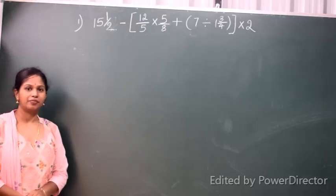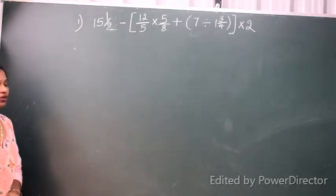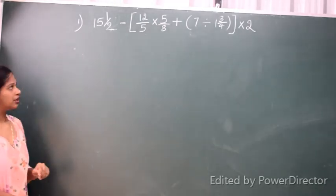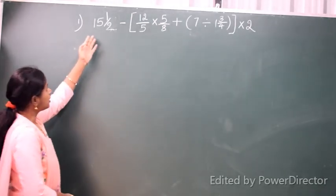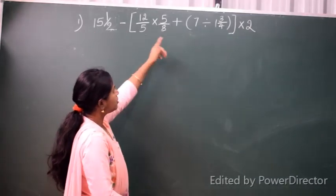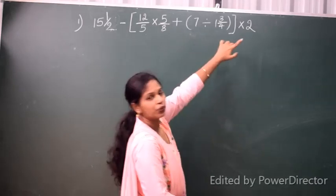I'm going to solve a simple problem. The problem is: 15½ minus [12/5 × 5/8 + 7 ÷ 1¾] × 2.